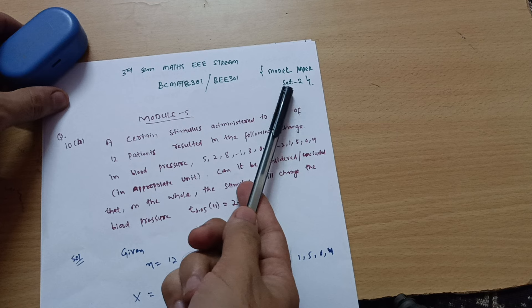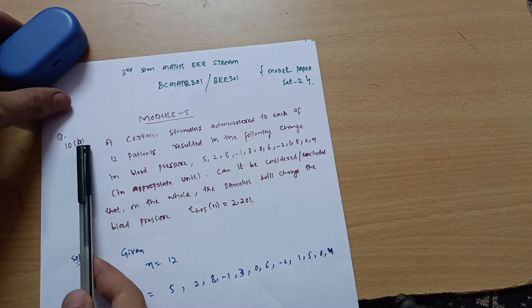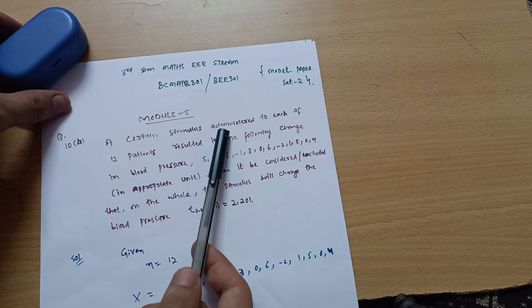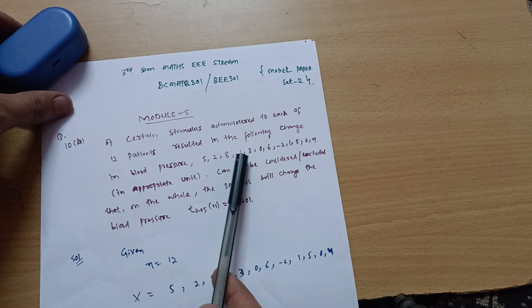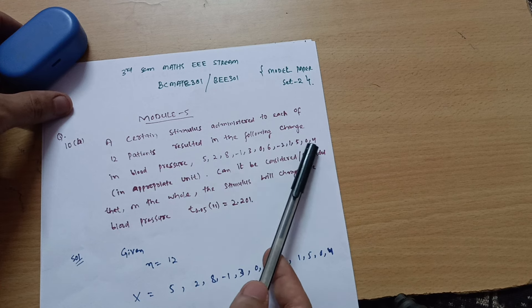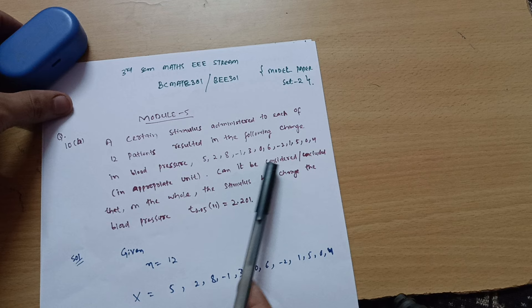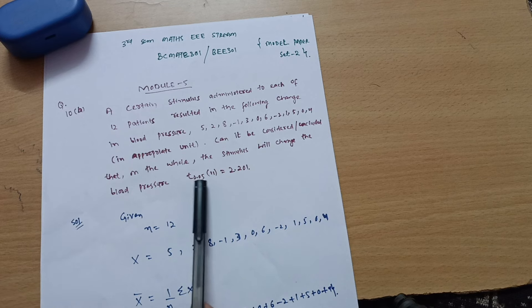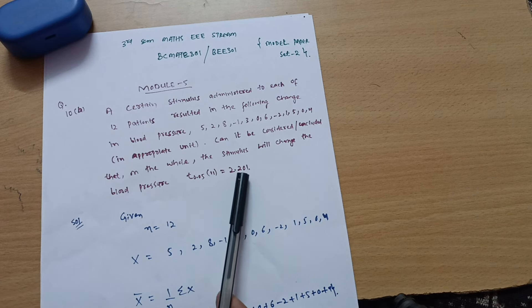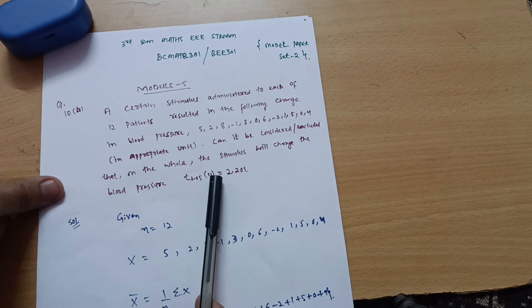This is the model paper set to question number 10b. A certain stimulus administered to each of 12 patients resulted in the following change in blood pressure. This is the data given: 5, 2, 8, -1, 3, 0, -2, 1, 5, 0, 4 in appropriate units. Can it be concluded that on the whole, the stimulus will change the blood pressure? T at 5% level of significance is equal to 2.201, and what is this 11? 11 is called the degree of freedom.